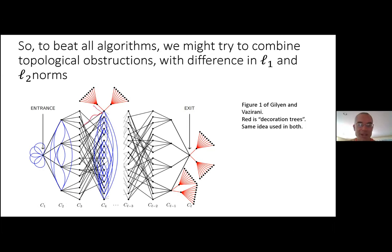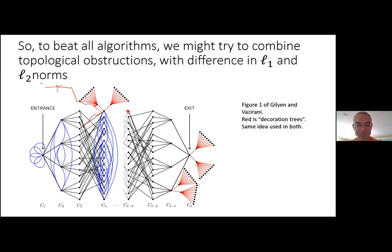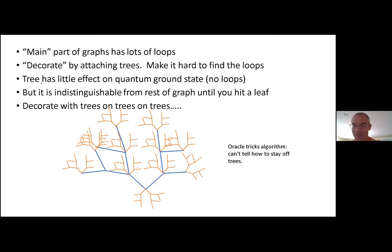A walker moving along the main graph might step onto a decoration tree and has no way of distinguishing it from the rest of the graph. It follows the tree until it hits a leaf, then realizes it went the wrong way. Even if you tell the algorithm the full construction, it still can't avoid getting confused — it has no local way of knowing it has stepped off the correct path onto one of these trees.